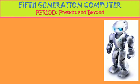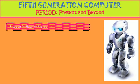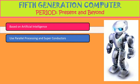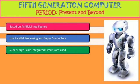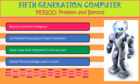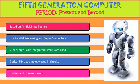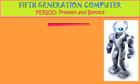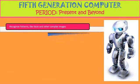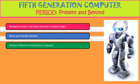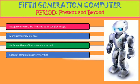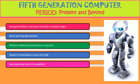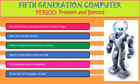Now we come to the 5th generation computers. The period is present and beyond — these computers exist today and will continue into the future, with development still in process. They are based on artificial intelligence, use parallel processing and superconductors, and use super large scale integrated circuits. Optical fiber technology is used in the circuits. They can understand human speech, recognize patterns like faces and complex images, and are more user friendly. They perform millions of instructions per second, making their computation speed very high. All high level languages are used, and they are very expensive due to their capabilities.